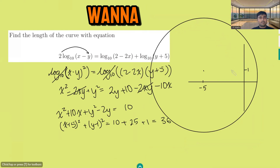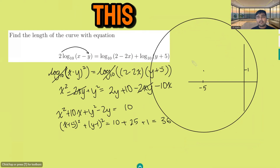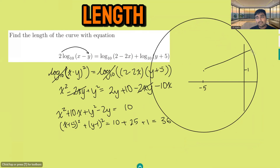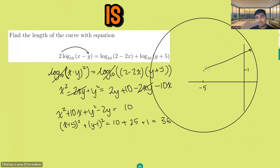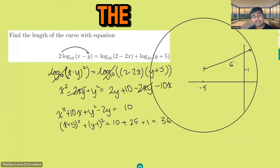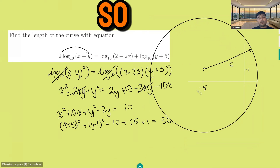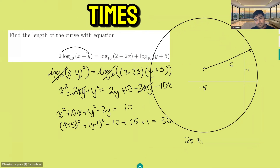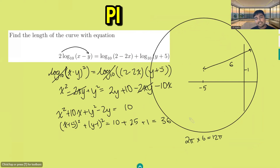There is our circle, and we want to know the length of this curve. Well, it's a circle — we know the length is just the circumference, so 2π times r. The radius is 6, so the answer should be 2π times 6, which is 12π.